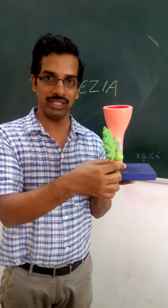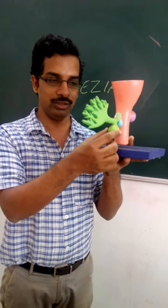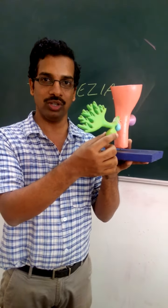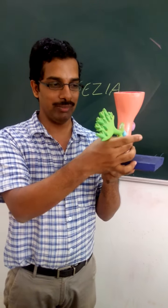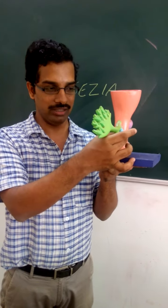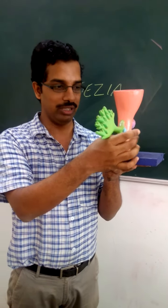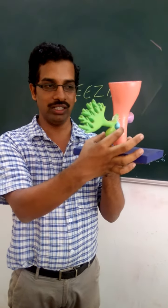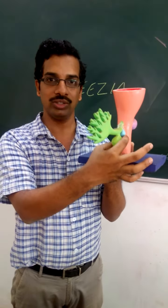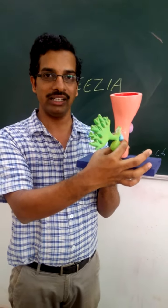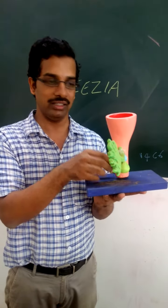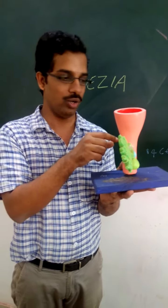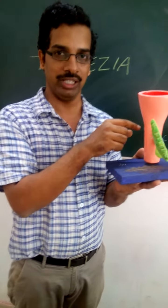From the hepatic bud, as you can see, there is one more outgrowth called the cystic bud, which will form the gallbladder. Along with the hepatic bud, just below it, there will be a blue-colored outgrowth called the ventral pancreatic bud. Just opposite to that, there will be the dorsal pancreatic bud.